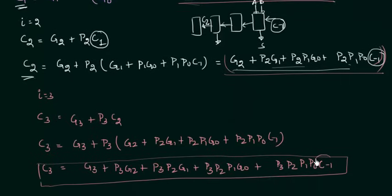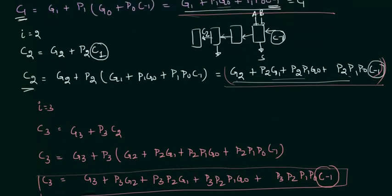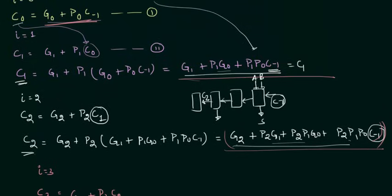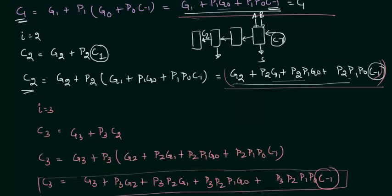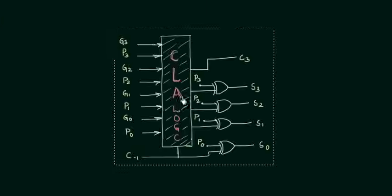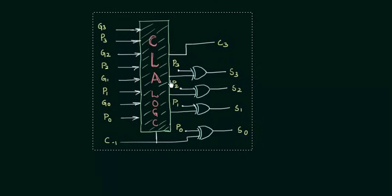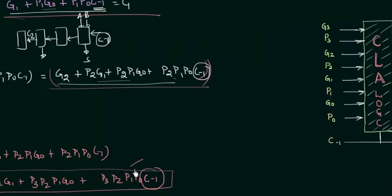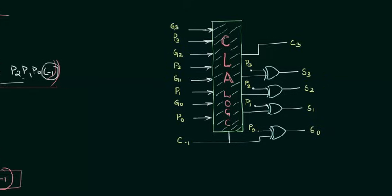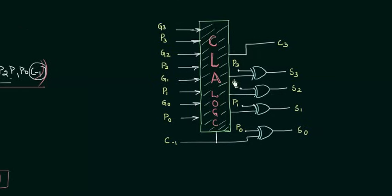So this is the value of C3, C2, C1, and C0. You can see that all of C0, C1, C2, and C3 have only C-1 as the carry term on the right hand side, so they can all be evaluated directly. We need to implement this circuit so we can obtain our sum and carry. The CLA logic block contains all the equations we evaluated, and it requires G3, P3, G2, P2, G1, P1, G0, and P0 as inputs.